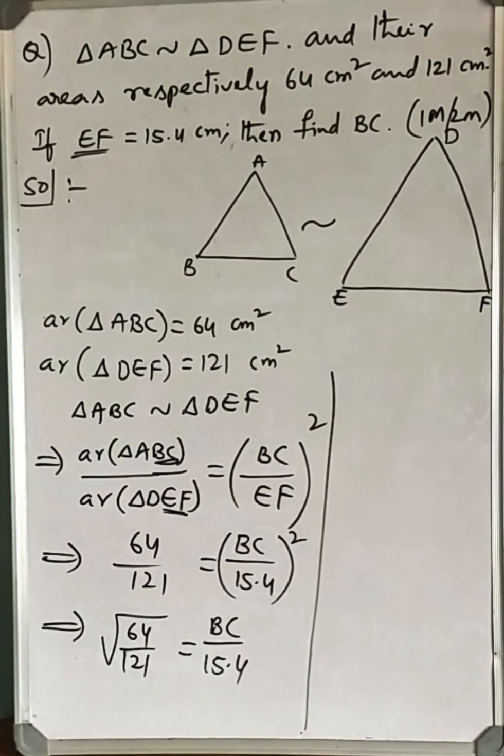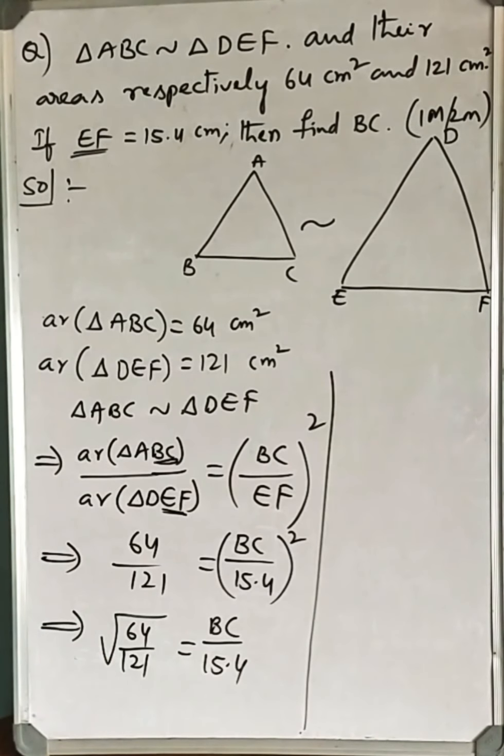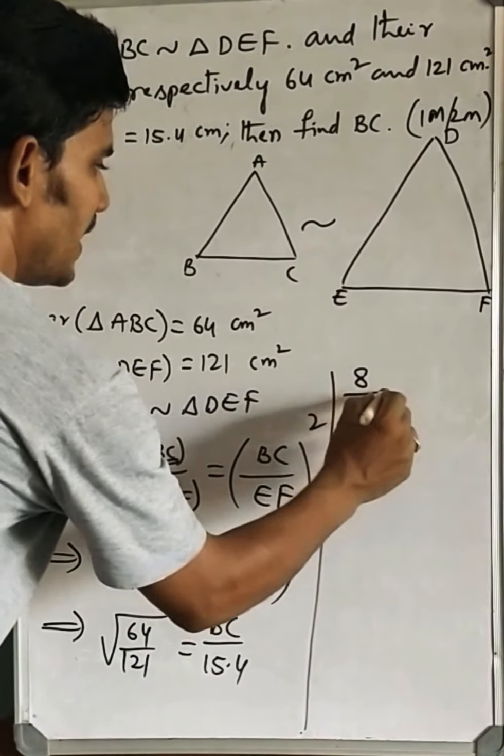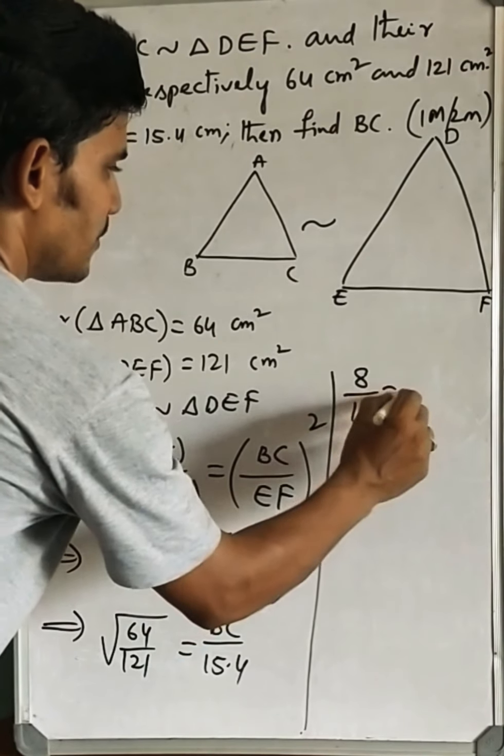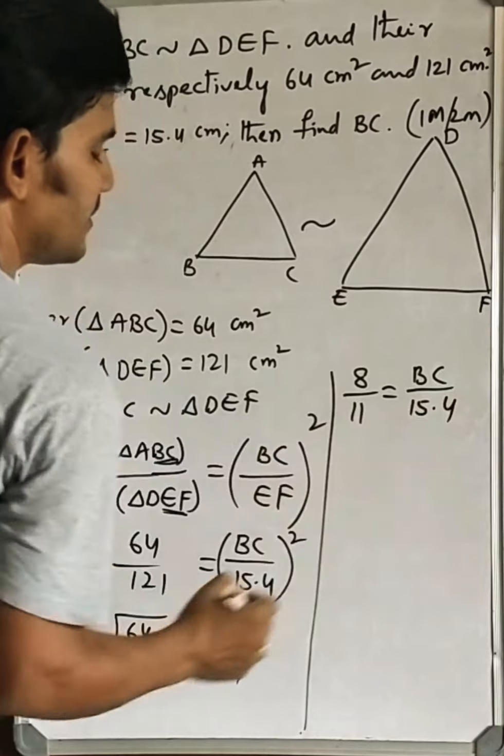Now, as these two are perfect squares, root 64 is 8, root 121 is 11. So 8 by 11 is equal to BC by 15.4.